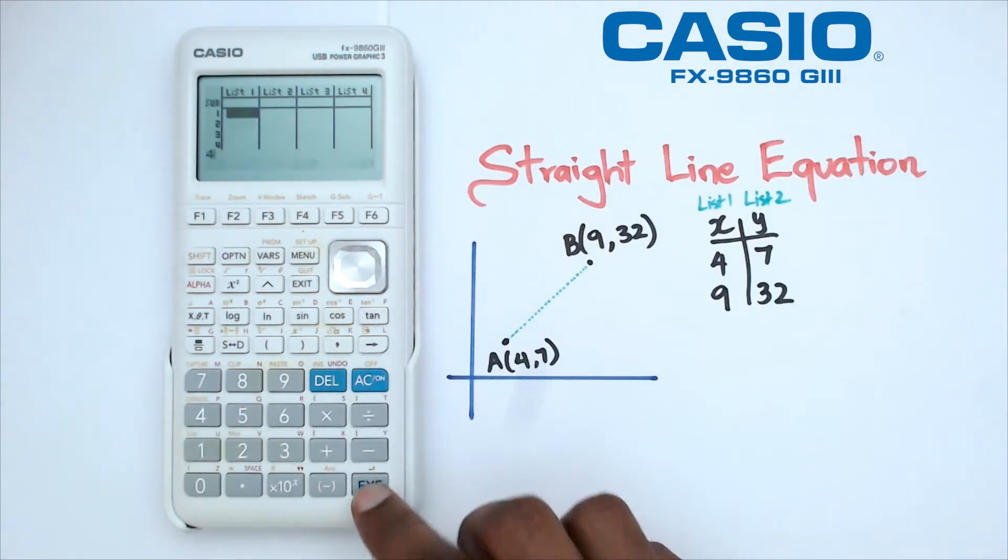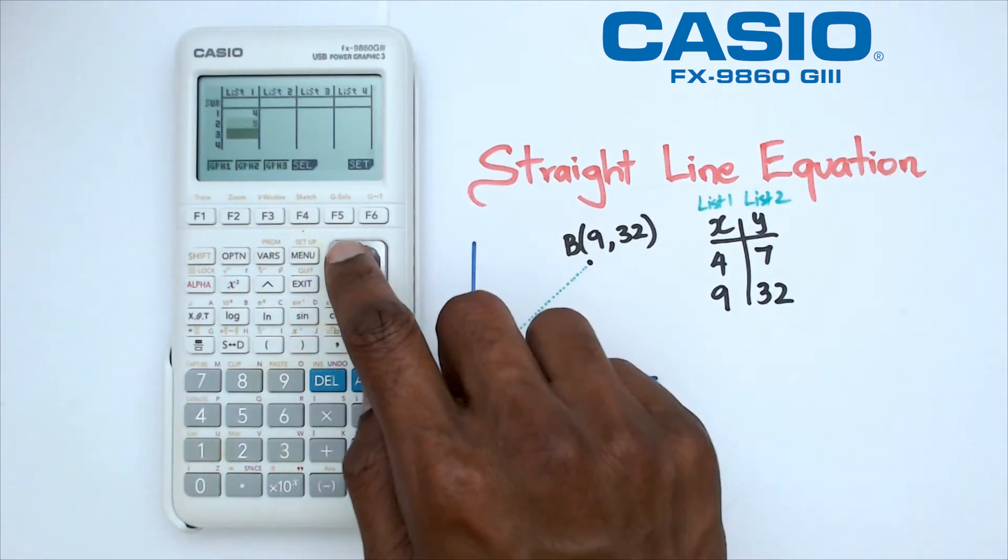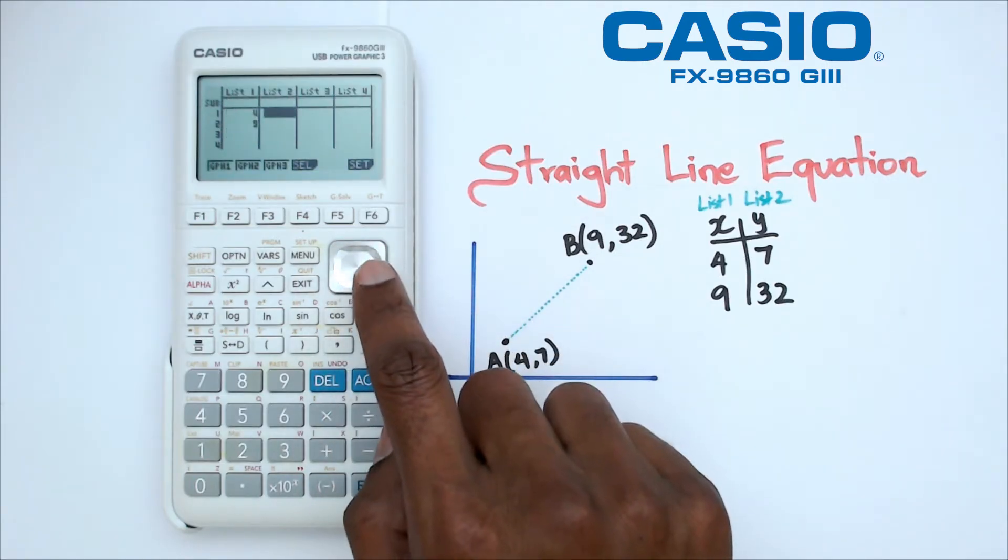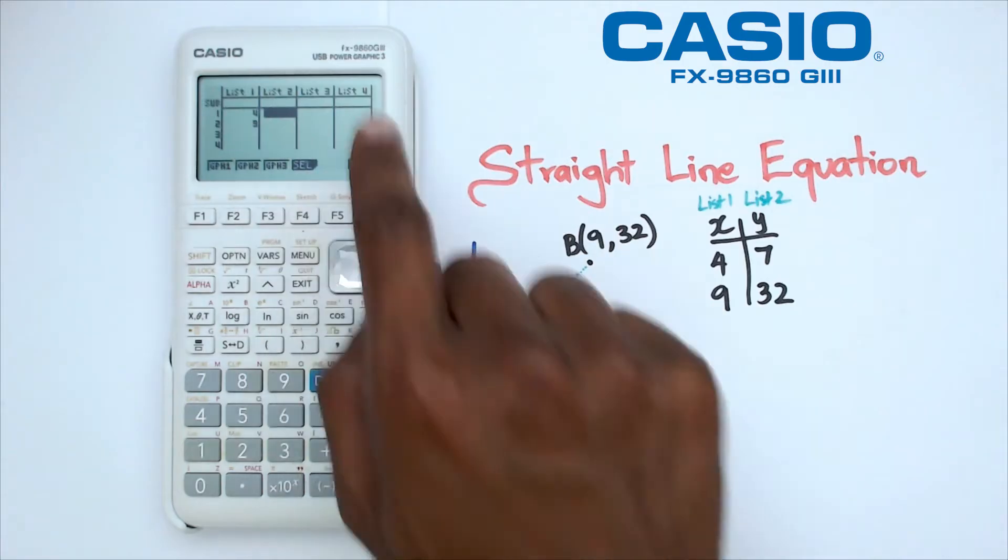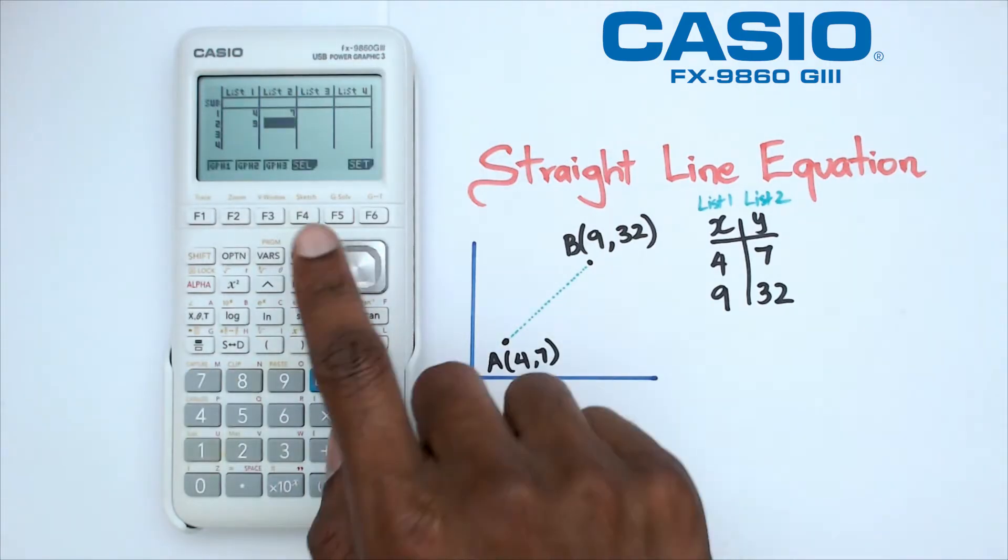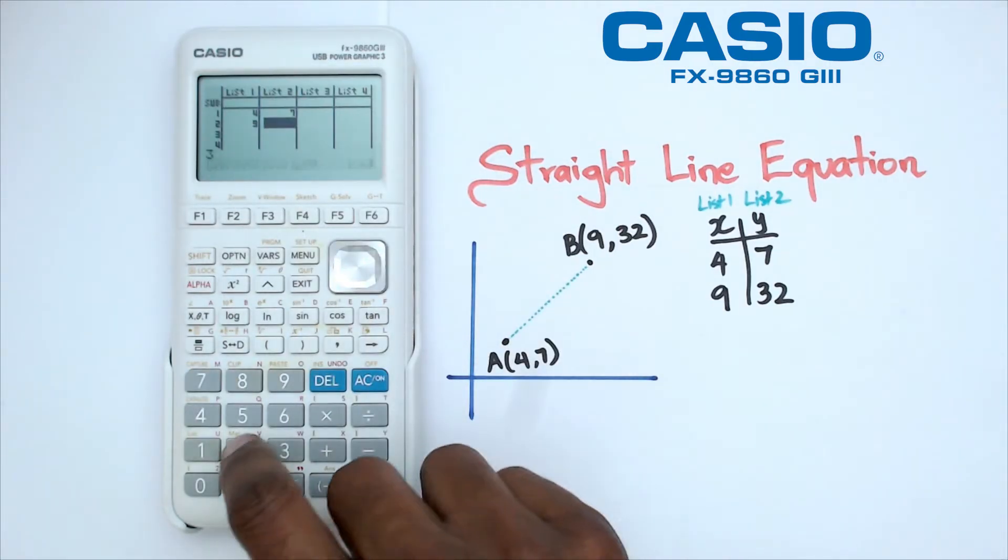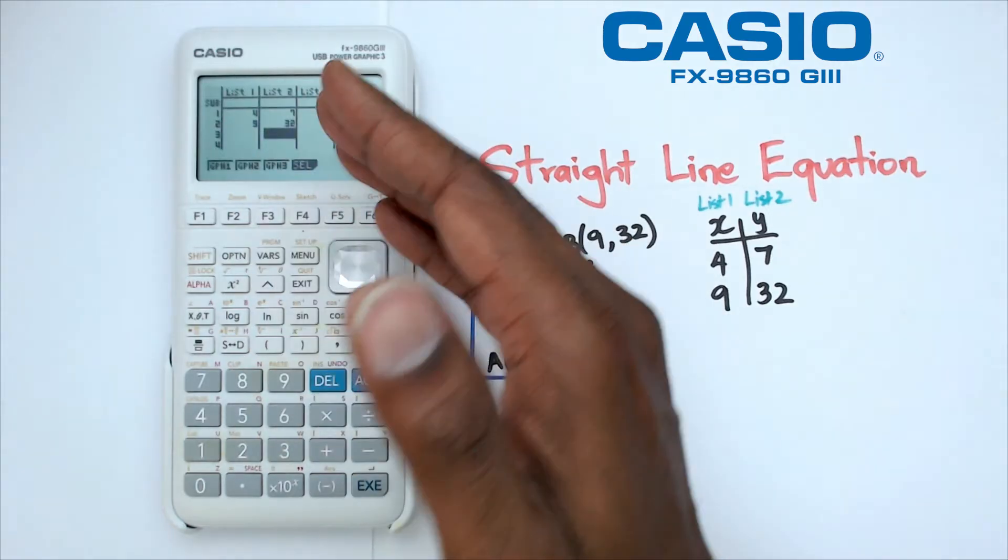We've got 4 and then we've got 9. Then we're going to move across using the cursor, heading over to list 2. When X equals 4, Y is equal to 7. When X equals 9, Y is equal to 32.